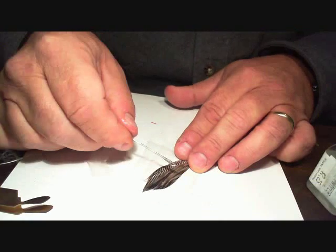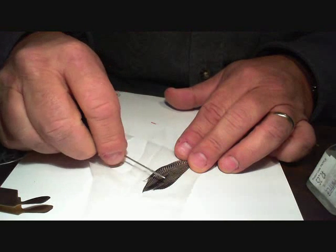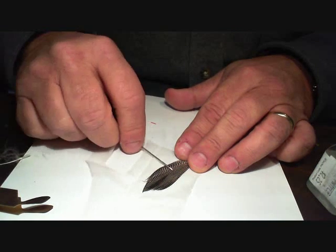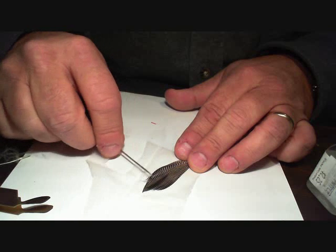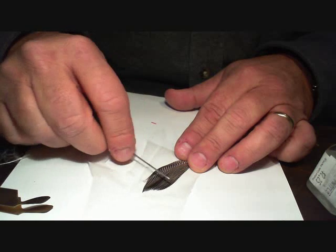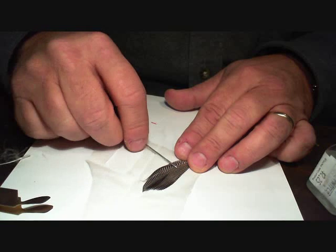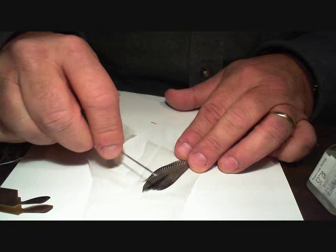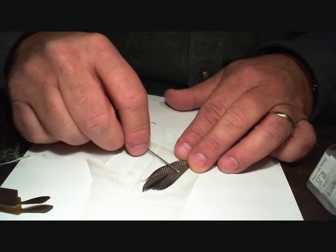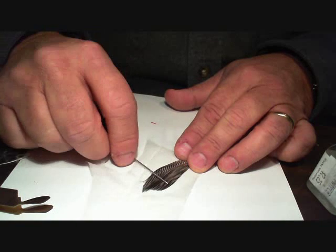Put a little bit more cement on it. Again, stroke the cement, pressing down with a needle or another toothpick. Make sure cement is coated entirely through the feather onto the back of the paper.